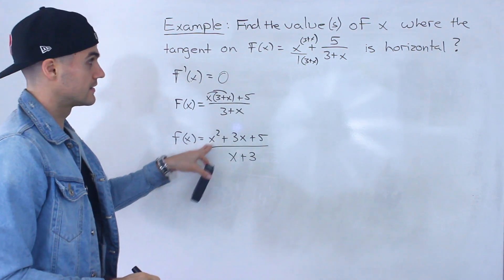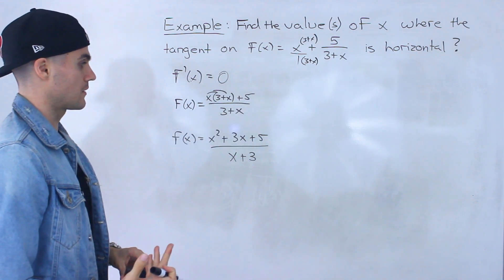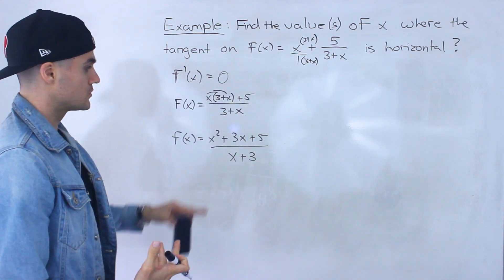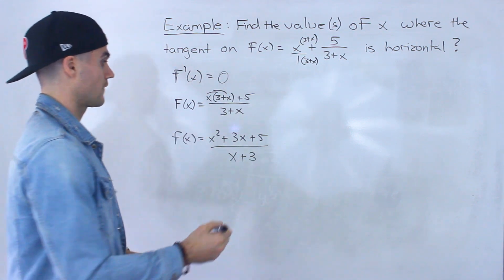So this and this, the original function that we were given, are the exact same thing. And now what I'm going to do is I'm actually going to derive this here. I'm going to use the quotient rule on this.